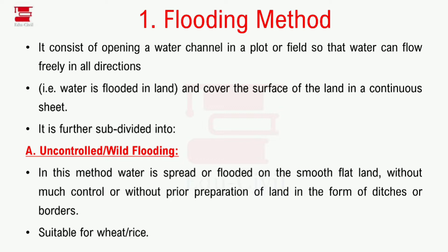Water is flooded over the land and covers the surface in a continuous sheet. In the flooding method, it can again be classified. The first type is uncontrolled or wild flooding, where water is spread or flooded in a smooth flat land without much control or without prior preparation in the form of ditches or borders.